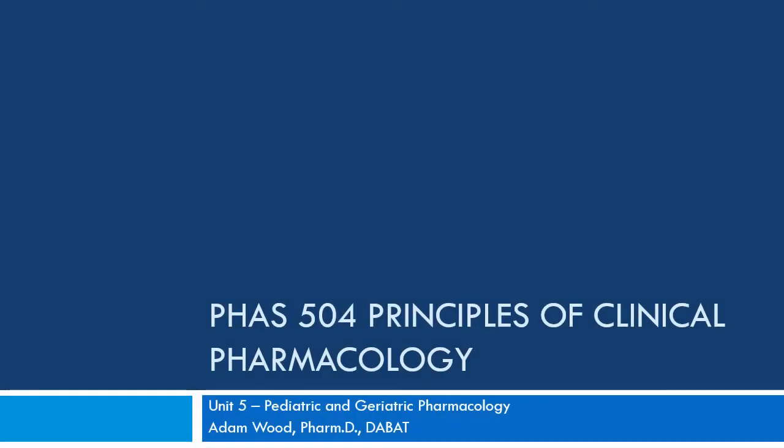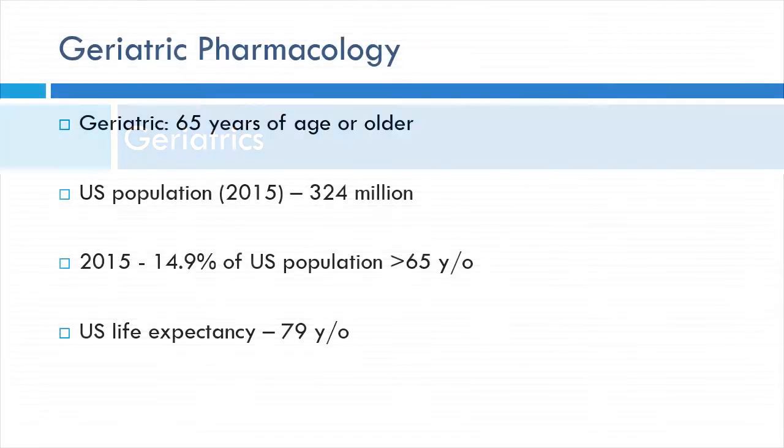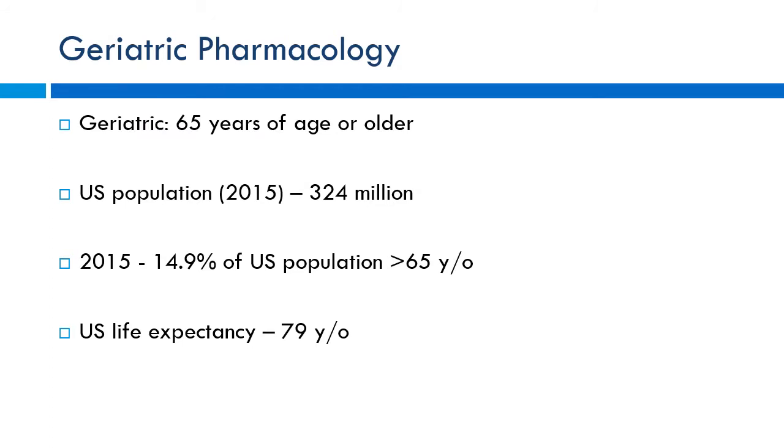Today we're talking about some special populations — pediatrics and geriatrics. We're going to start with geriatrics first. When I say geriatrics, who am I referring to? Older people. 65 is a pretty good cutoff age, so we're going to consider them geriatrics.